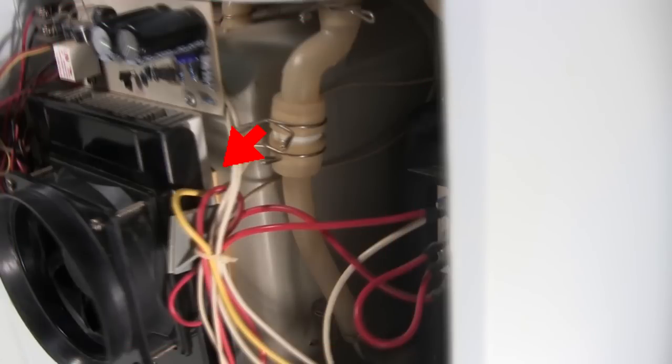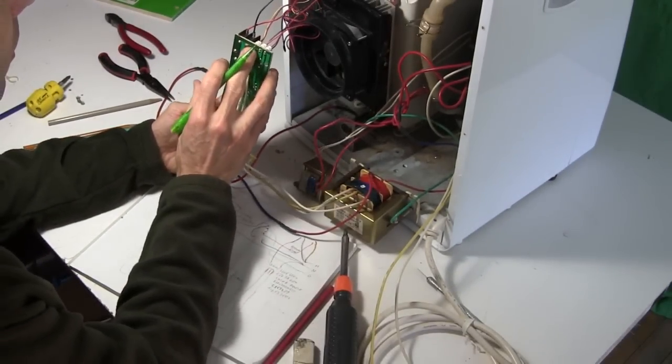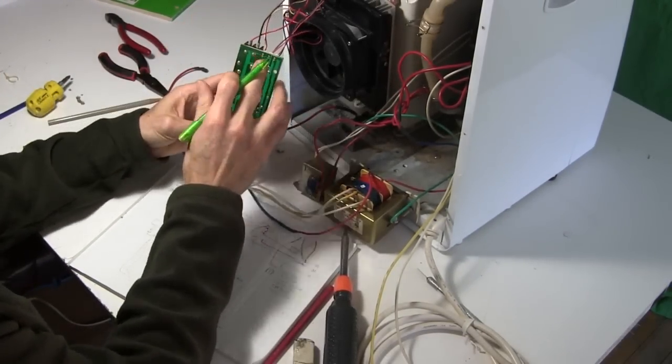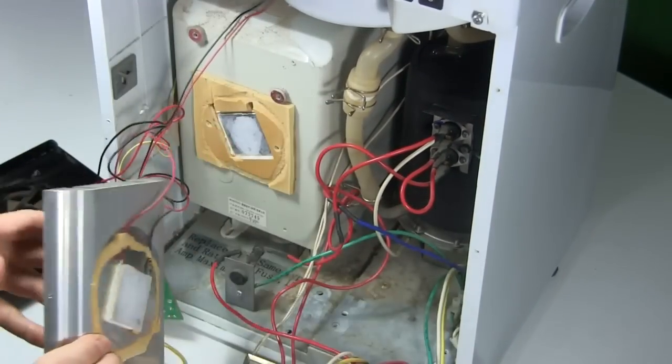I started by removing and analyzing enough electronics to know which parts were for the heating side and which were for powering the Peltier module. I then removed the fan and then the heat sink to finally find the Peltier module itself.